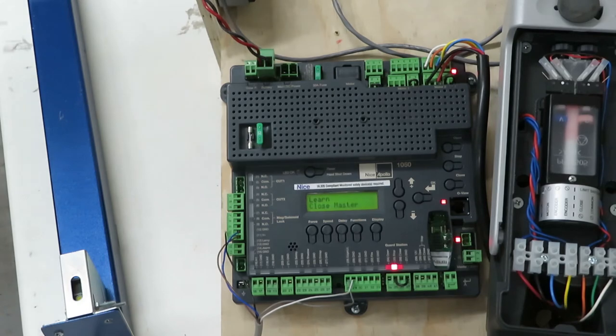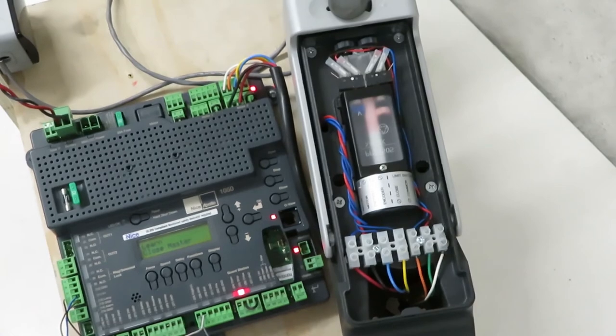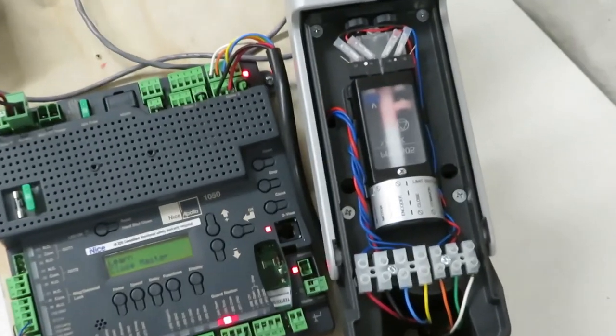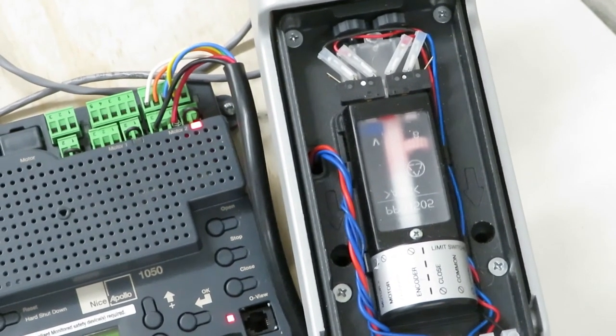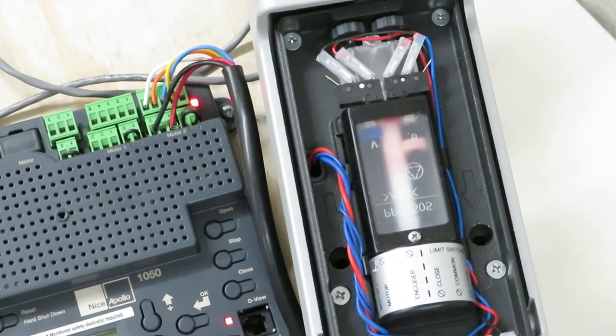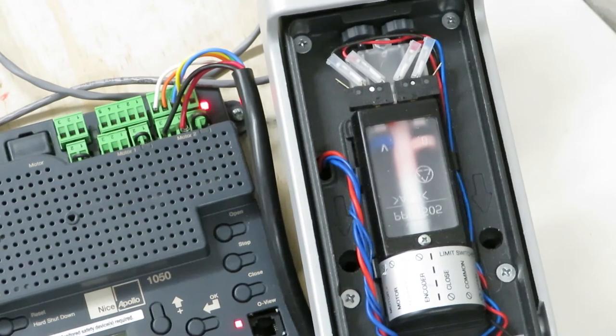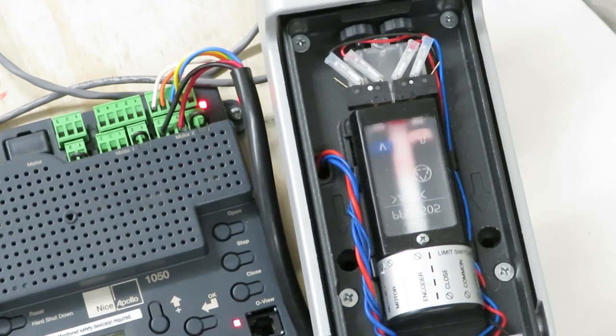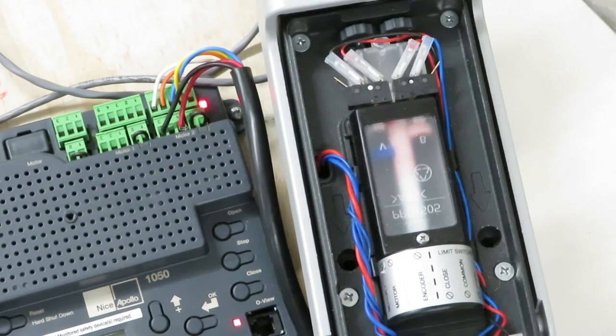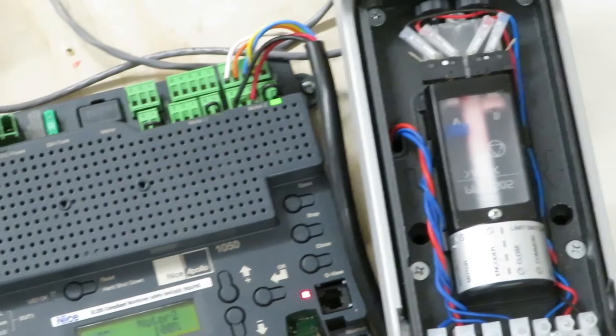And you can see over here the limits in this little thing are moving back and forth as it finds the limits. A little gearing in there. That's how that works. So it found the closed limit switch. Now it's looking for the open limit switch. And you see that little wheel spinning and moving up and down the spline. And it's going to hit the switch about right now. So if you ever wondered what's happening under the hood, that's what's happening. So it's all set to go.